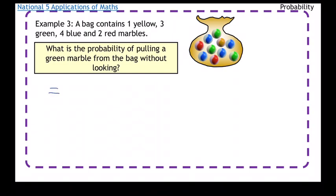So our probability is going to be three over the total number of outcomes. You need to be careful there. Make sure you add up all the marbles. So one plus three is four plus four is eight plus two is ten. So it's three over ten is the probability.